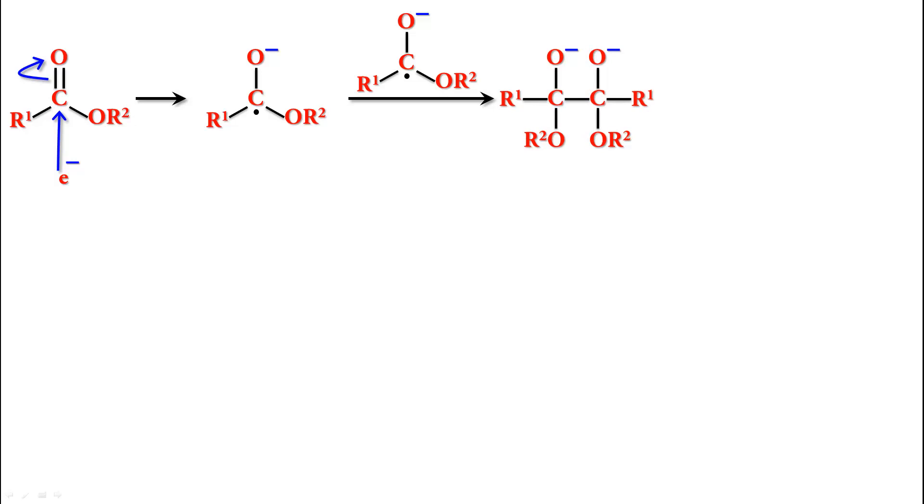And remember the negative charge on this is being stabilized by Na+ which I'm not showing right now. Now the minus on one of the oxygens is going to come back and OR2 is going to leave because O is electronegative, it can stabilize the negative charge. And therefore you get a ketone part and the same thing is repeated again and we get a diketone.